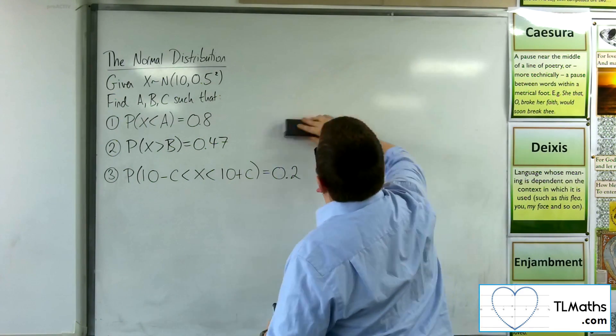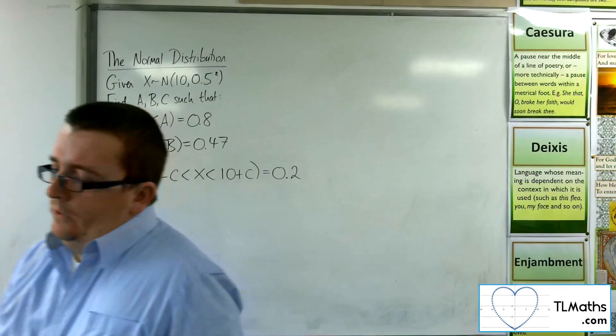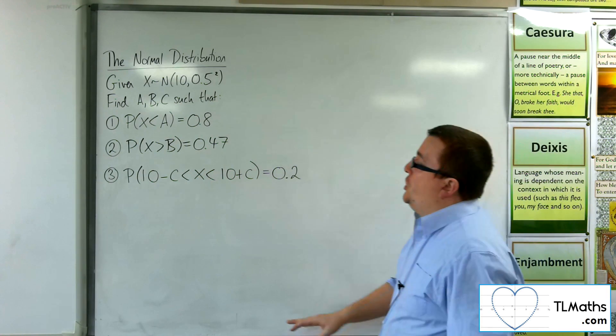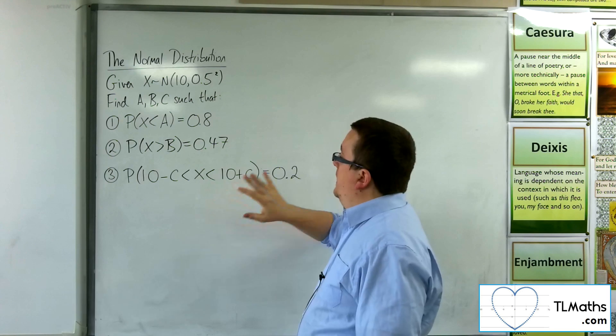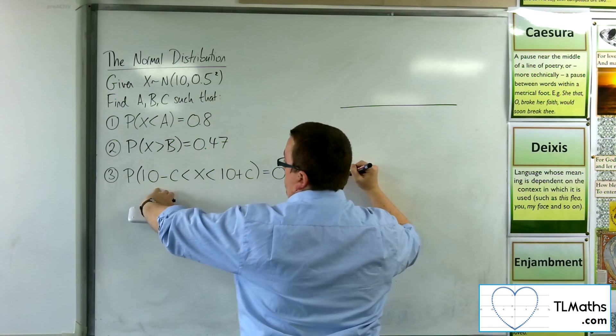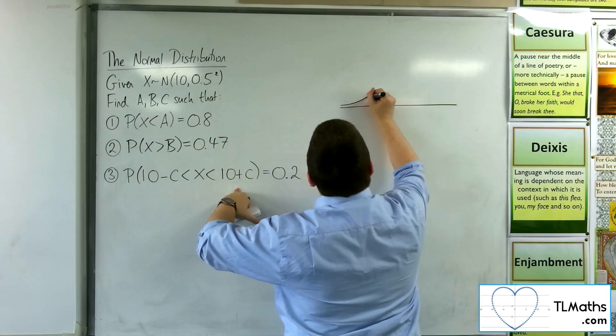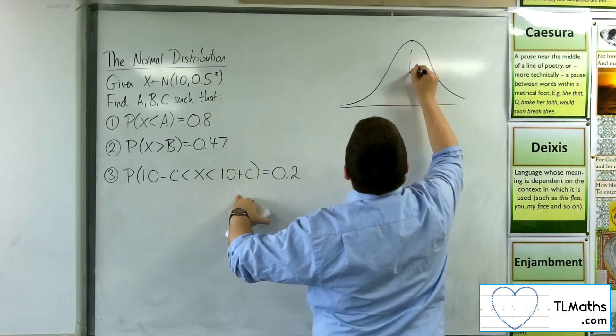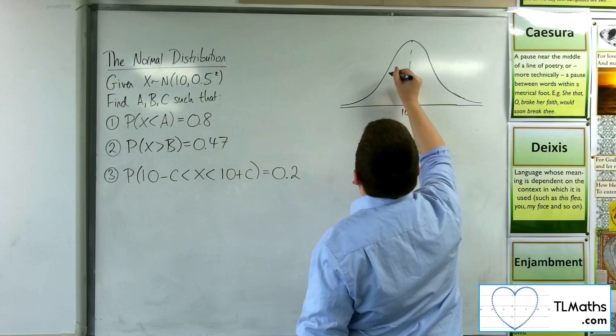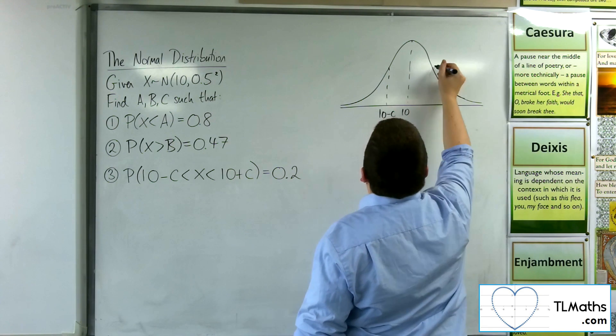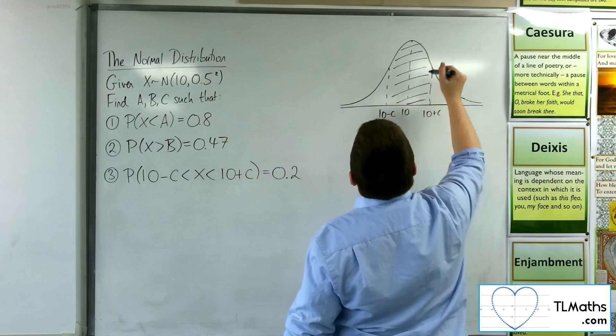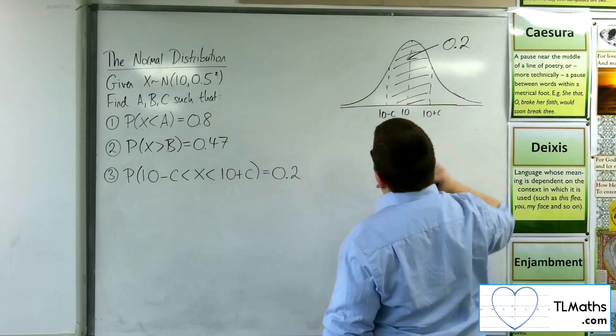So now let's have a go at this third one. What we're saying here is that the probability of x being between these two values, 10 take away c and 10 plus c, is 20%. So as you can see, because we've got 10 take away c and 10 plus c, that's symmetric about the mean. So if that's my 10, then I've got 10 take away c and 10 plus c. And this region here represents 20%.